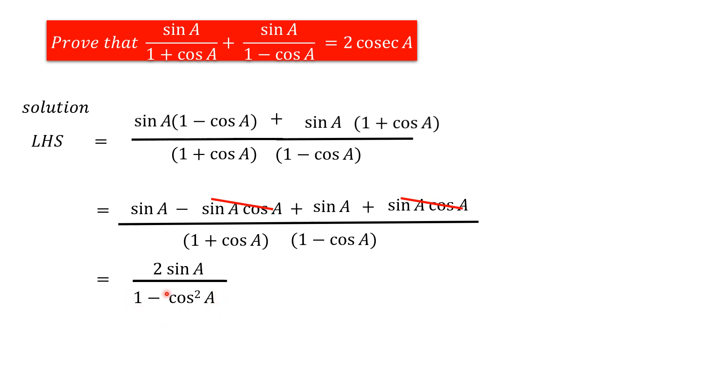Next, we have to convert this 1 minus cos square A by using one of the trigonometric identity equations. That is, sin square theta plus cos square theta equals 1. So, rearranging this equation, we get sin square theta equals 1 minus cos square theta.